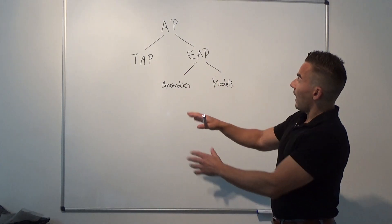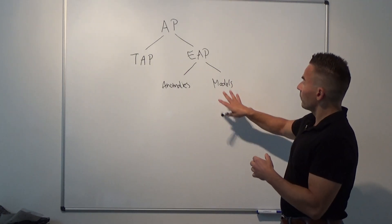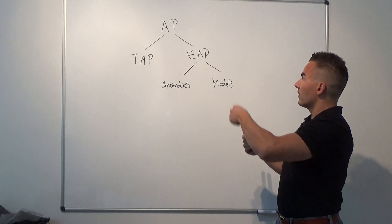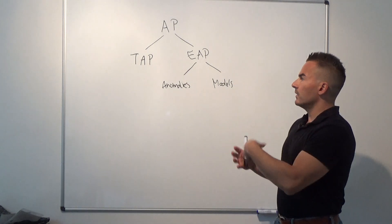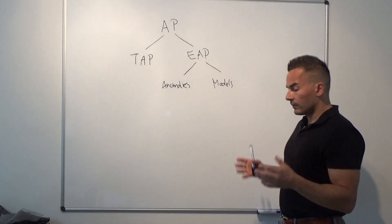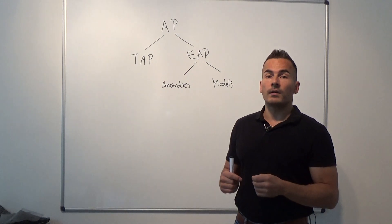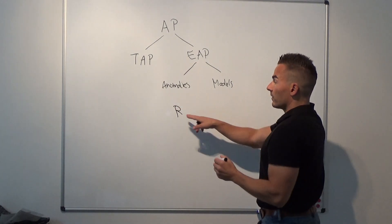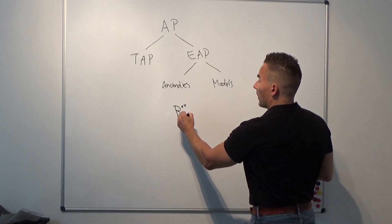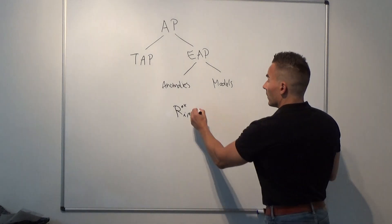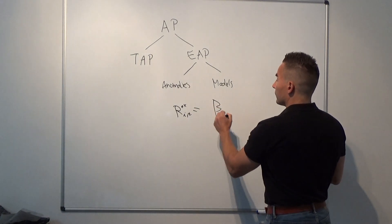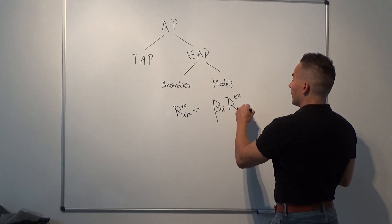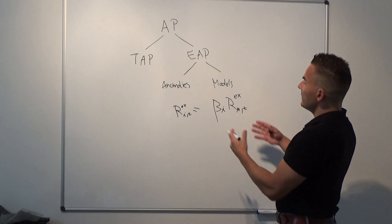On the other hand, we have models. This stream of research deals with uncovering risk factors that explain the cross-section of asset markets. For instance, in undergraduate studies you might have encountered the Capital Asset Pricing Model, or CAPM — a simple model where the excess returns of stock i at time t are explained by its exposure beta i against the market factor Rm in excess form at time t.